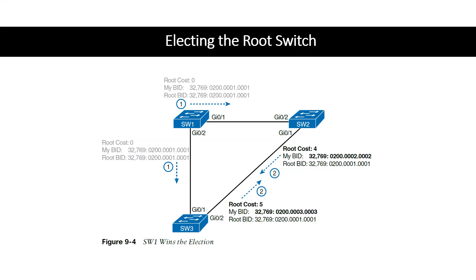Good morning folks, welcome back to the CCNA initiative. We're on chapter nine of the CCNA 200-301 official cert guide. Where we left off in chapter nine, talking about spanning tree concepts, we just finished discussing the process of electing the root switch — the election process and tiebreakers. If you missed that, go ahead and watch the previous video.